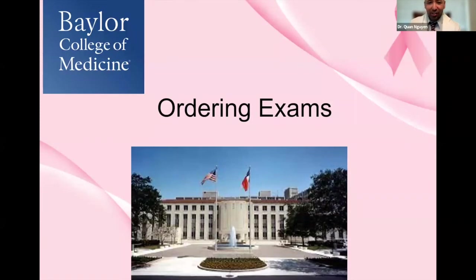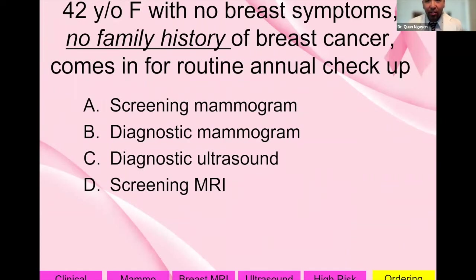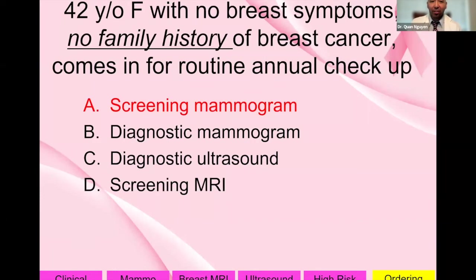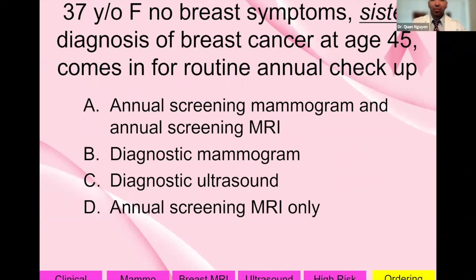Now, how to order exams. A 42-year-old female with no breast symptoms, no family history, coming in for a routine annual check: she's average risk, over 40, so you order a screening mammogram. A 37-year-old female with no breast symptoms but whose sister was diagnosed with breast cancer at a younger age: since she has a first-degree relative, she needs supplemental screening — annual mammogram plus annual breast MRI.